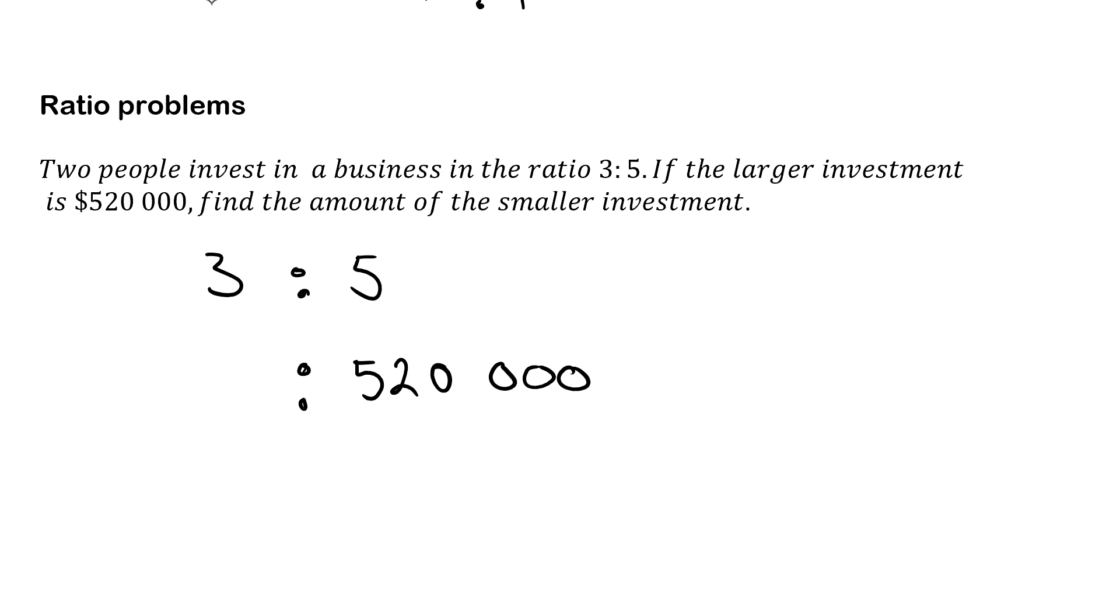The next thing you want to find is what 1 is worth. So I know 5 parts, essentially what I'm saying is 5 parts is $520,000. I want to find what 1 part is worth. So to do that we divide by 5 and we divide by 5. So that gets us $104,000. So I know 1 part is worth $104,000.